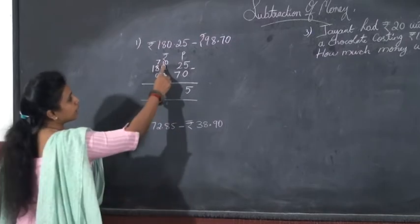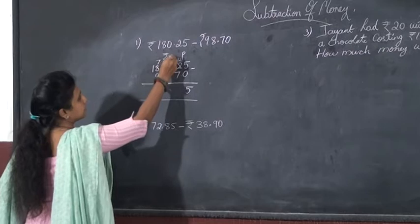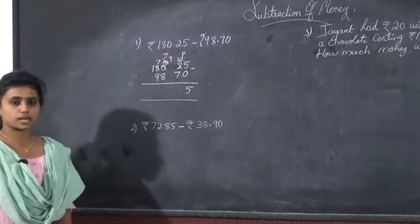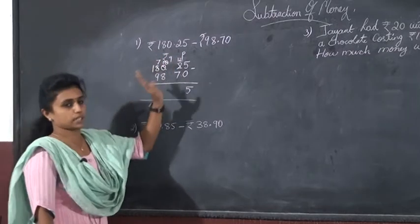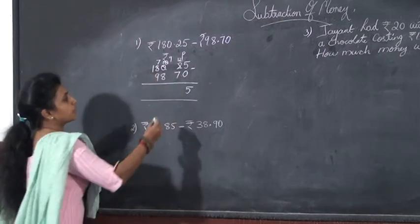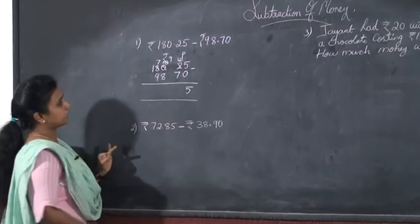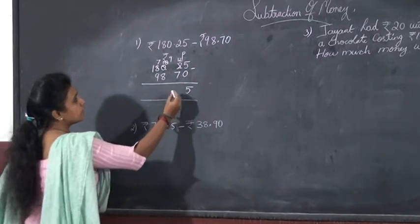Okay, then give 1 to this number. It becomes 12 and remains 9. Then, what is 12 minus 7? 12 minus 7? It is 5. 8, 9, 10, 11, 12. Answer is 5.